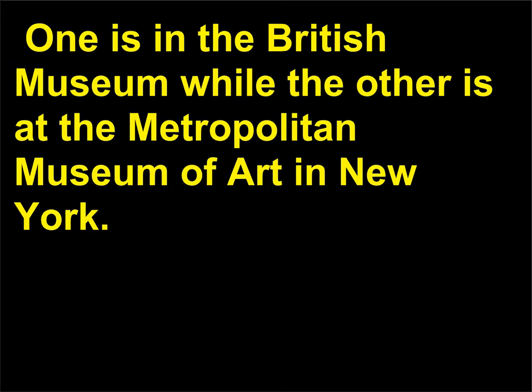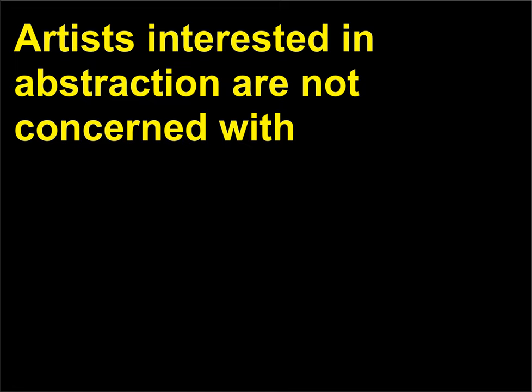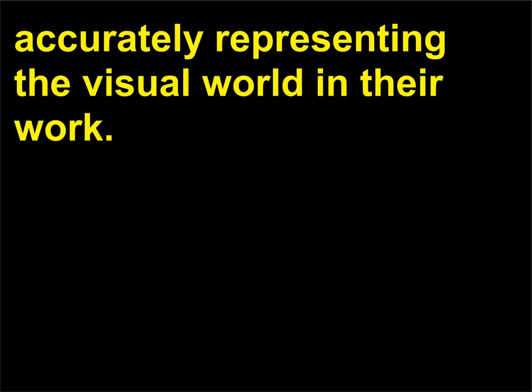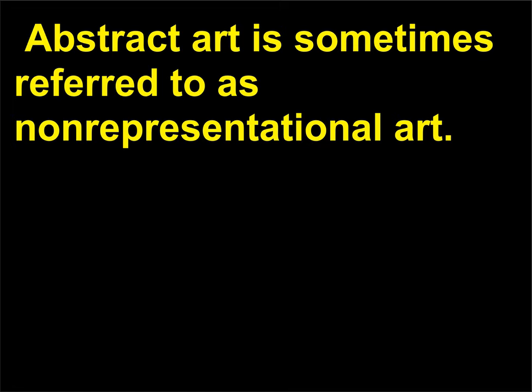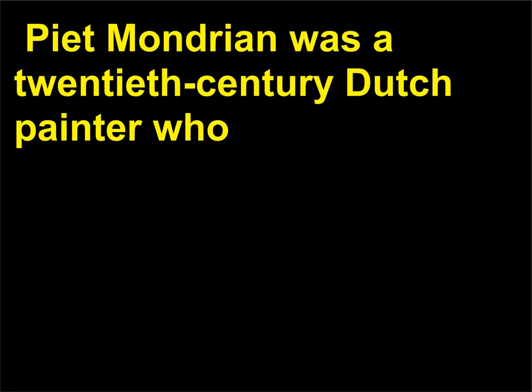What is abstraction? Artists interested in abstraction are not concerned with accurately representing the visual world in their work. While some abstract artists distort the real world, other abstract artists are purely expressive and do not refer to the real world at all. Abstract art is sometimes referred to as non-representational art. Piet Mondrian was a 20th century Dutch painter who pioneered abstraction in an art movement called De Stijl, famous for his paintings containing simple, balanced, geometric forms using a limited color palette.